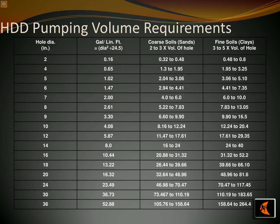The pumped volume requirements for HDD jobs vary depending on the size of the hole and the type of soil. For coarse soils such as sands, the volume needed is 2 to 3 times the volume of the hole. For fine soils such as clays, the volume is 3 to 5 times the volume of the hole. When dealing with bulk bentonite, measures of 35,000 to 40,000 layers are recommended to ensure good mixing.